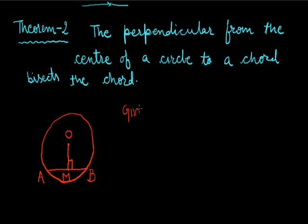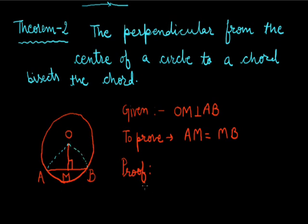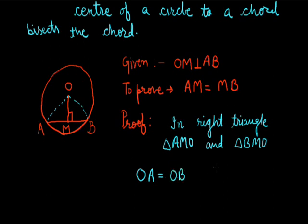Then we have to prove that M is the midpoint, that is AM is equal to MB. For proving this, join A with O and B with O. So two triangles are formed: triangle AMO and triangle BMO, and both are right triangles. OA is equal to OB, as both are radii of the same circle.